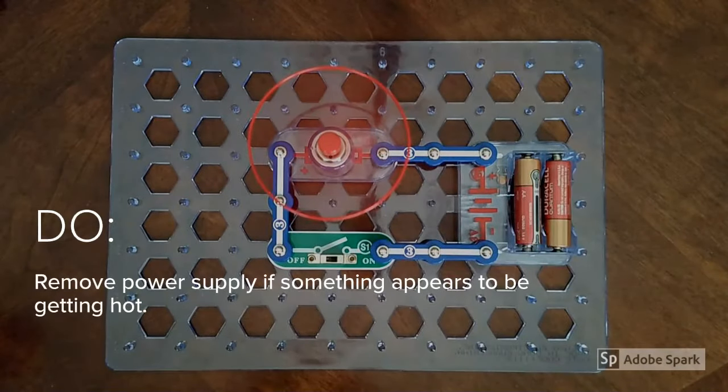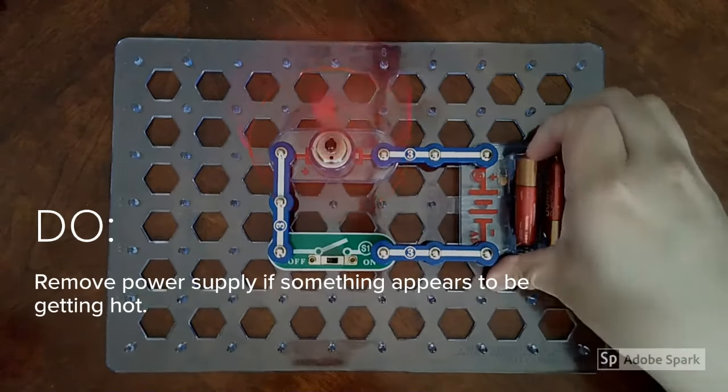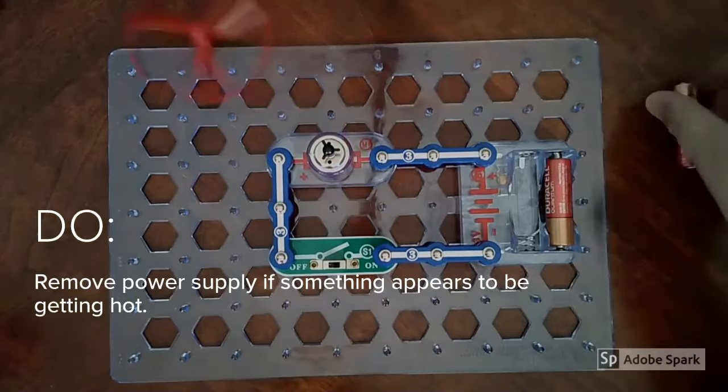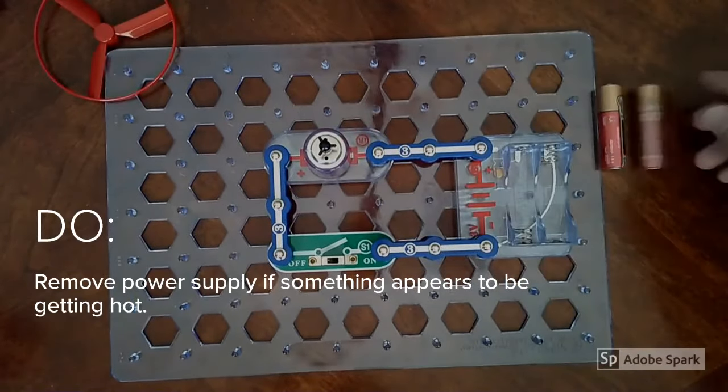If you notice a component in your circuit is getting too hot, the first thing you want to do is remove the power supply. That means taking out the batteries from the battery holder or unplugging your AC port from the wall.